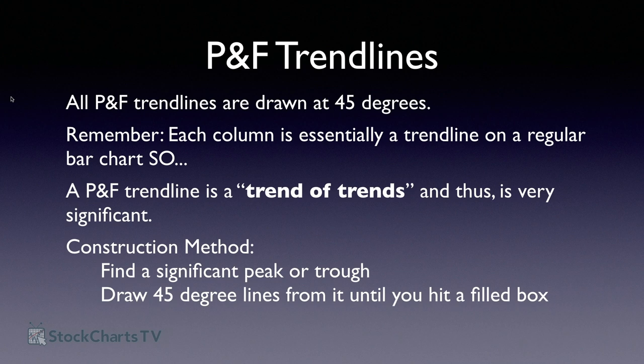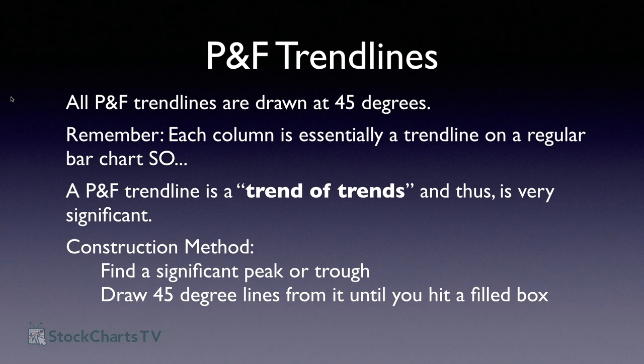To create them: find a significant peak or trough, then draw a 45-degree line up or down until it hits another filled box. StockCharts automatically adds PnF trend lines to your charts if you have that turned on, and it's easy to continue them manually since they're always at 45 degrees. Compare that to bar and candlestick charts where trend line placement is very subjective — on PnF charts it's much more objective.